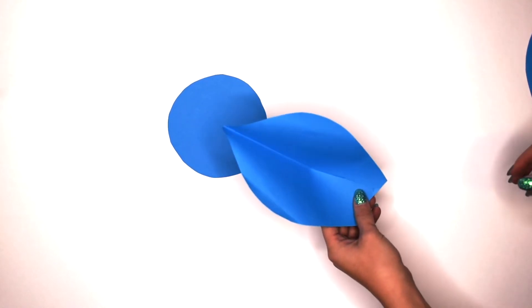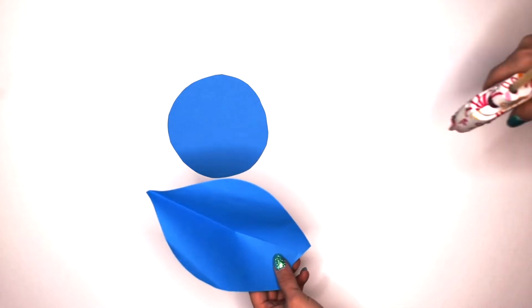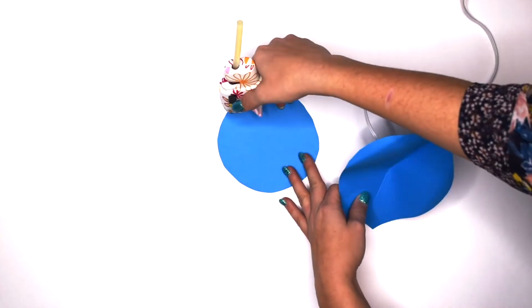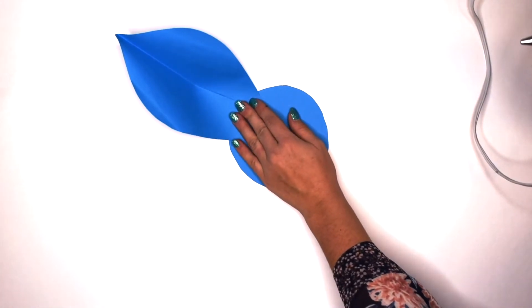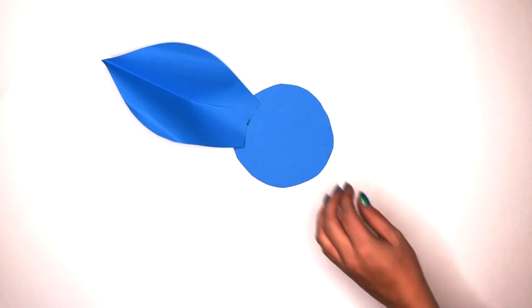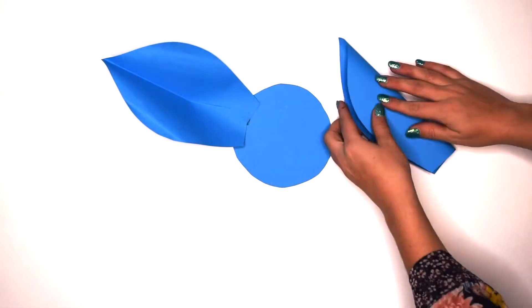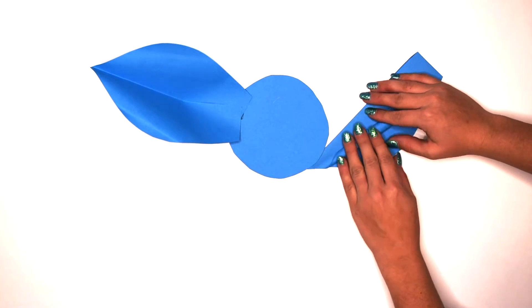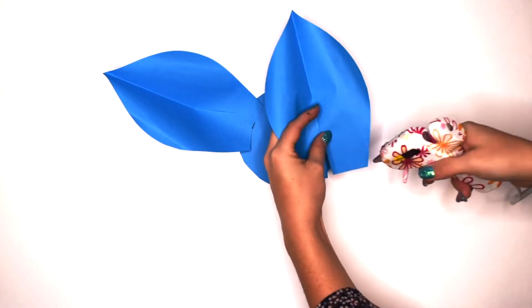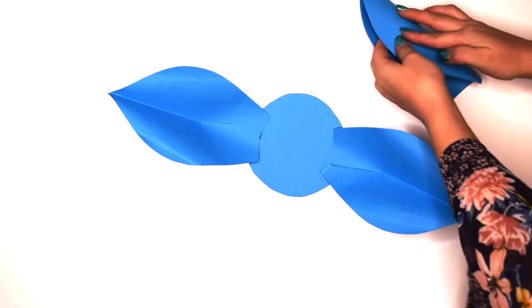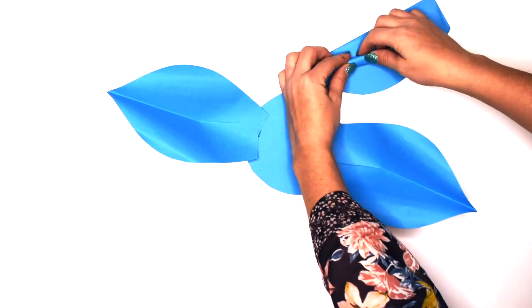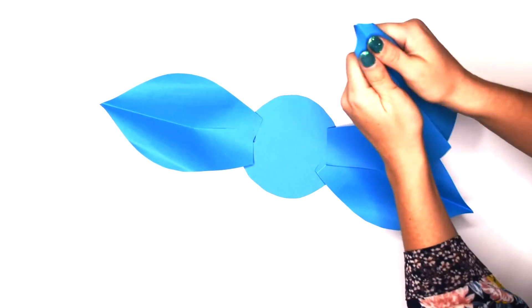Once it's dry it's time to glue it to our circle. That circle is going to be our base. So add a glue dot on the outside, that's because we're going to do the outside layer of petals first. Hold it down firmly until it dries and move on to the next petal.